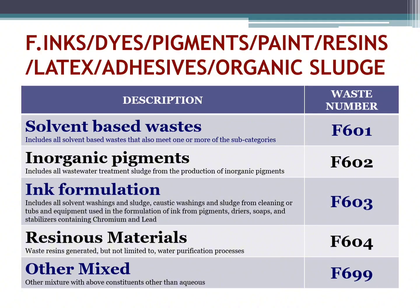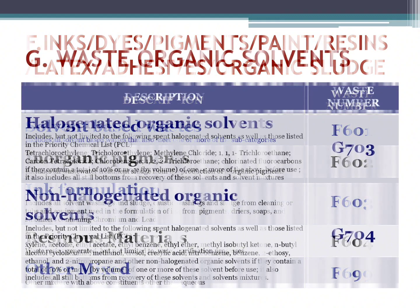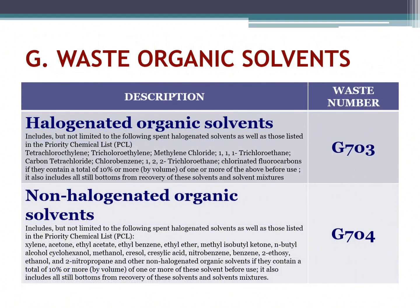Other mixtures with the above constituents. Waste number F699. Waste organic solvents — halogenated organic solvents: includes but is not limited to spent halogenated solvents, as well as those listed in the priority chemical list. Waste number G703.